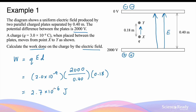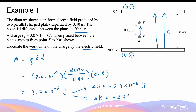This means that as a result of the force acting on the charge by the electric field, 2.7 × 10⁻⁶ joules of energy has been transferred to the charge. Its change in potential energy is −2.7 × 10⁻⁶ joules, so it decreases by this amount. At the same time, its kinetic energy increases by the same amount, obeying the law of conservation of energy.